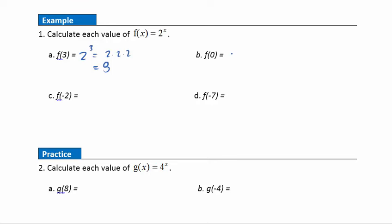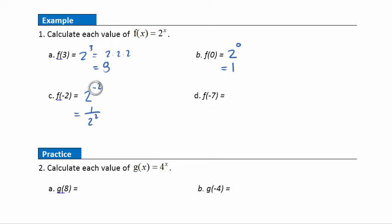For f(0): 2^0 = 1, because anything raised to the 0 power is 1. For f(-2): 2^(-2). Remember, a negative exponent means we take the reciprocal of the base, so this becomes 1 over 2^2, which equals 1/4.